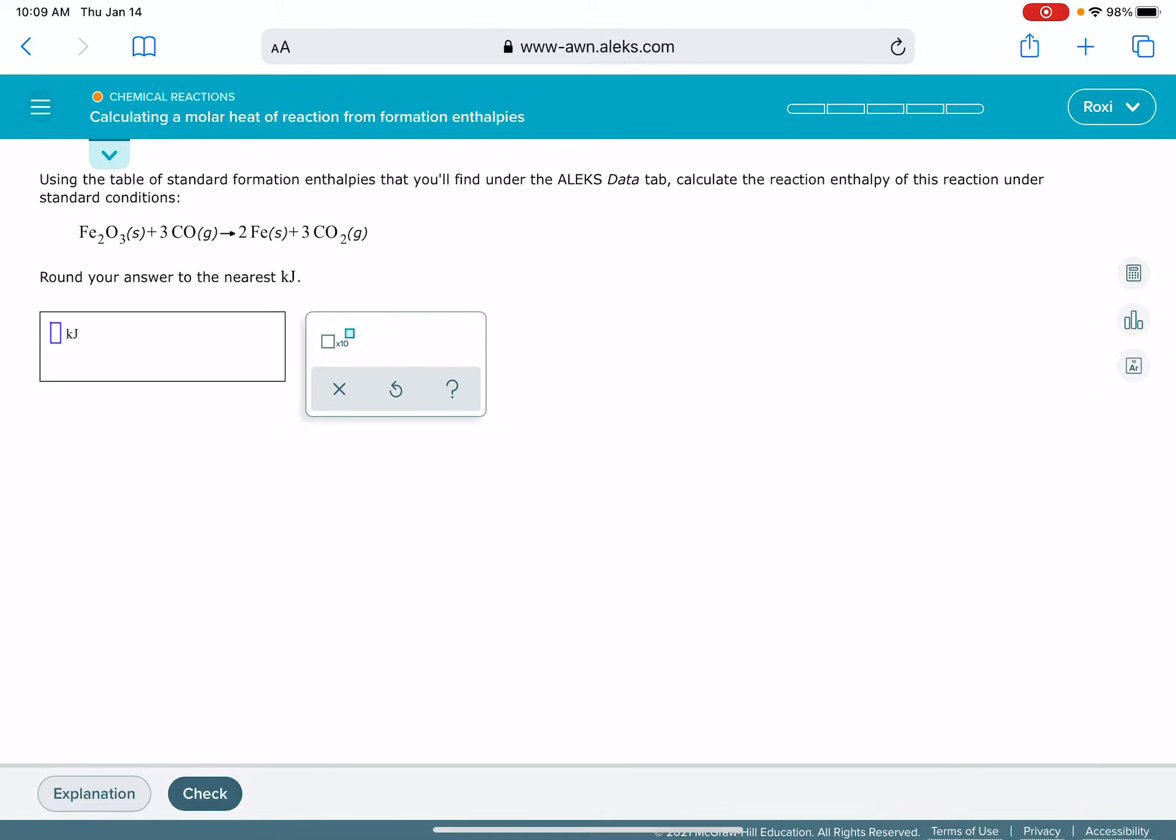In this problem, you're given a balanced chemical equation and you're asked to calculate the delta H for the reaction using the delta H of formation values for all of the reactants and all of the products.